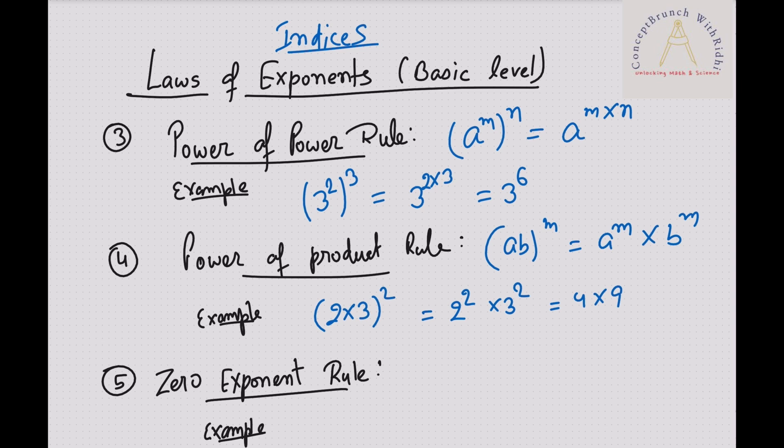Next, zero exponent rule. In that, something to the power 0 is always 1. Doesn't matter what it is, it can be million, trillion. If something to the power 0 is always 1, so simply we can write as a plus b to the power 0 is also 1. 5x square to the power 0 is also 1. Simply 6 to the power 0 is also 1.